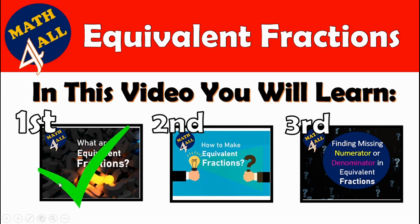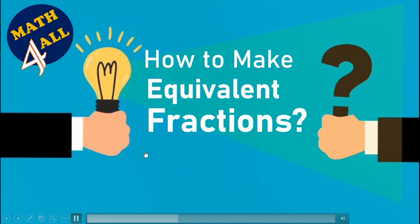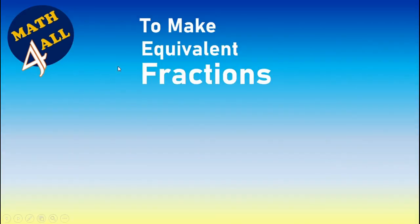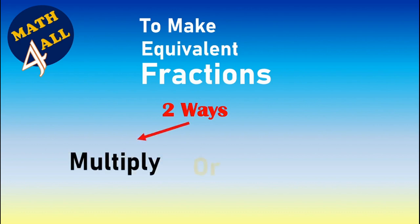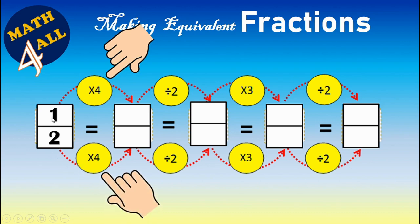Now we finish the first part on the meaning of equivalent fractions. Let's go to the second part: how to make equivalent fractions. You can multiply or divide. The rule is: whatever you do to the top, you have to do to the bottom. For example, if you multiply the numerator by four, you have to multiply the denominator by four.